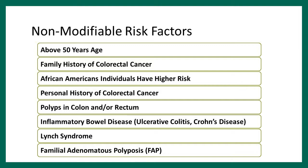Personal history of colorectal cancer greatly increases the chance of developing it again. The same goes for colon polyps — people who've had polyps will get more in the future, so we recommend more frequent screening. Inflammatory bowel disease — ulcerative colitis and Crohn's disease — also puts people at higher risk, especially after seven to ten years of disease, so we screen them every one to two years.